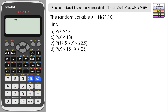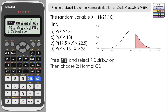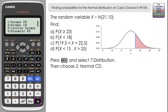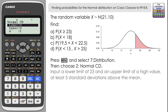For part a, X is greater than or equal to 23. We need to go to Menu, then 7 for Distribution, and we're going to use the Normal Cumulative Distribution — that's number 2 from the first page. With the normal cumulative distribution you're prompted for a lower and upper limit. We're looking for P(X ≥ 23), so the lower limit is going to be 23 — input that in the lower section.